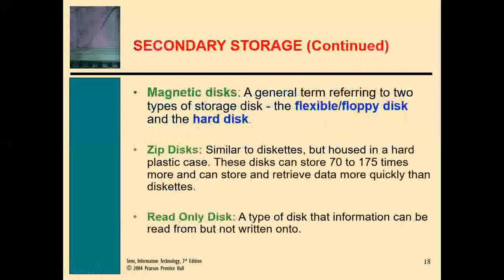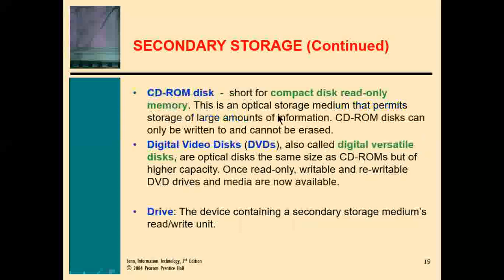Magnetic discs store data using magnetism, such as hard disks and tapes. Zip discs are similar to diskettes but slightly smaller. Read-only disks allow information to be read from them without writing — for example, a CD that has antivirus software is a read-only disk because you can only get what is on the CD; you cannot write on it. These are examples of secondary storage.